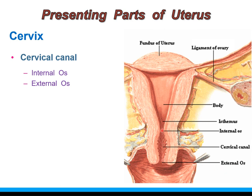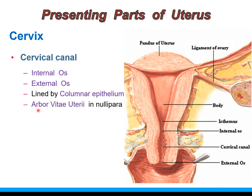The internal os corresponds with the level of the isthmus. The mucosa of the cervical canal is lined by simple columnar epithelium, which shows a number of mucus-secreting glands. The mucosal layer is thrown into folds in the form of a tree — a pattern of mucosal elevations known as arbor vitae uteri, seen in the nulliparous uterus.